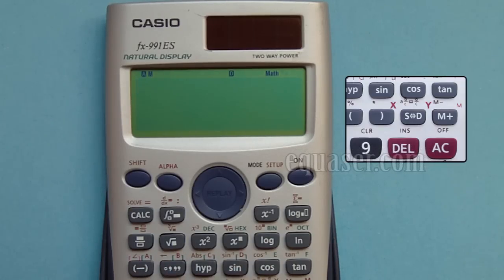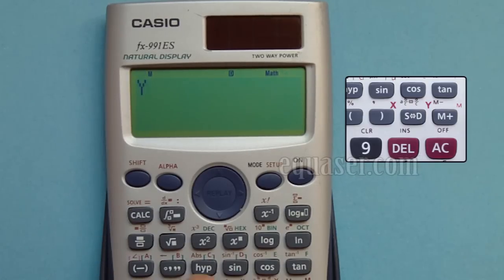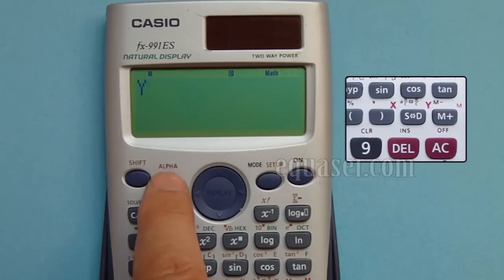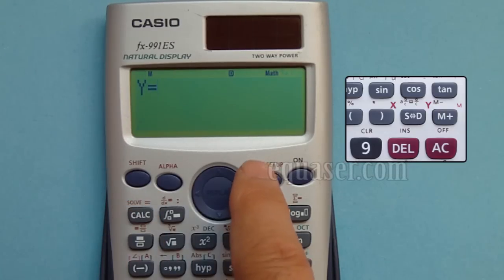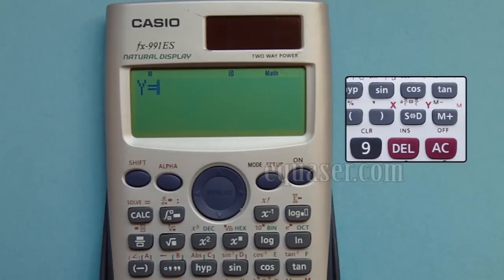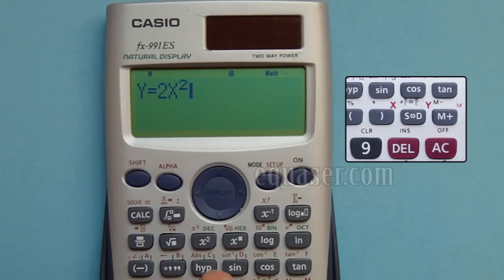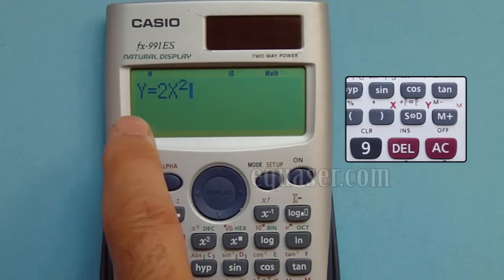I press alpha and Y, then the equal sign - again alpha and equal. So I create an equation Y is equal to X squared. I press alpha and X, then I press square.